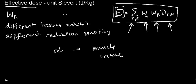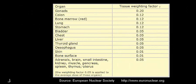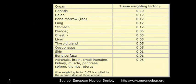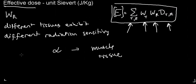The European Nuclear Society provides a tissue sensitivity table: the gonads are highly sensitive, the colon is somewhat sensitive and nearly as sensitive as bone marrow. Various organs show different sensitivities. These values are interesting but not necessary to memorize.